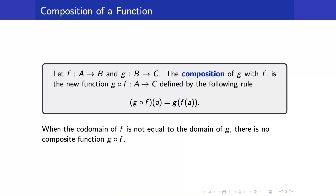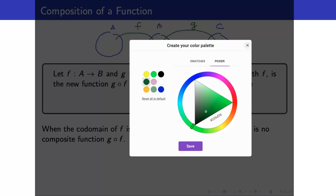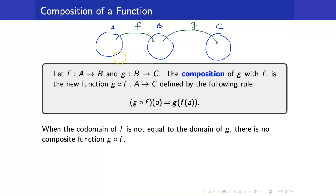Next, we discuss the definition of the composition of a function. Suppose we have two functions f and g. Take note that f is a function from A to B, and g is a function from B to C. The composition of g with f is the new function g circle f, and it is defined by the following rule: g circle f of a is equal to g of f of a.